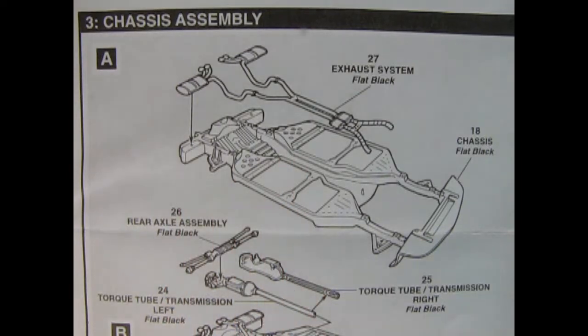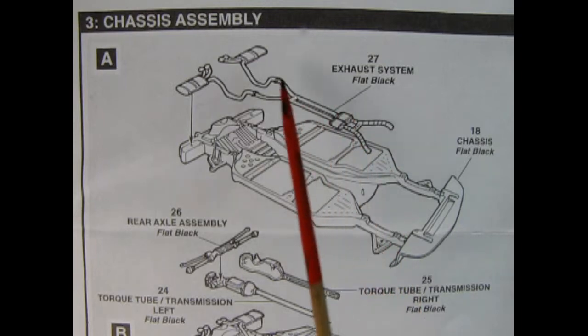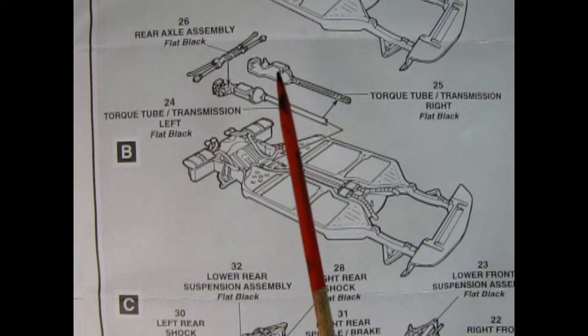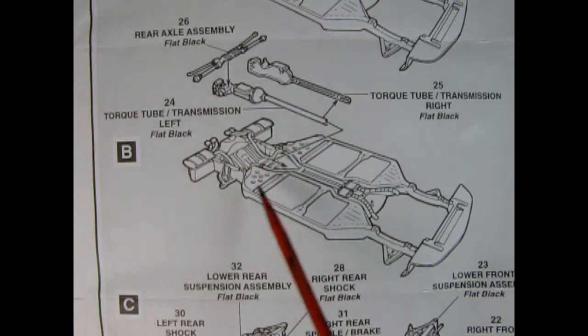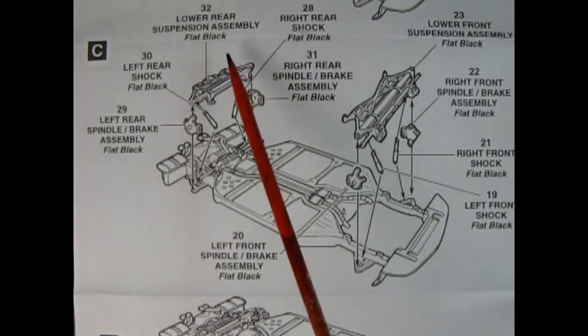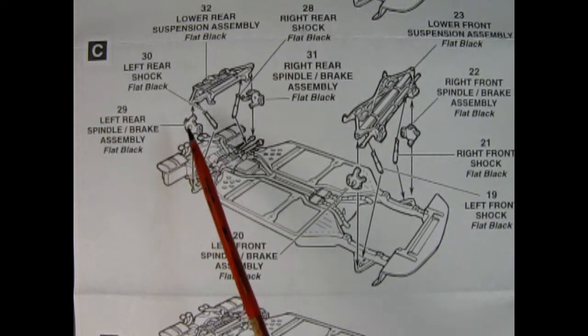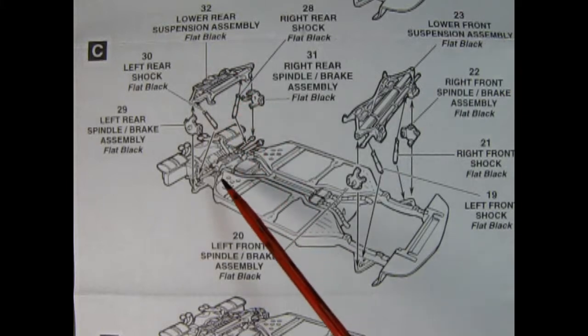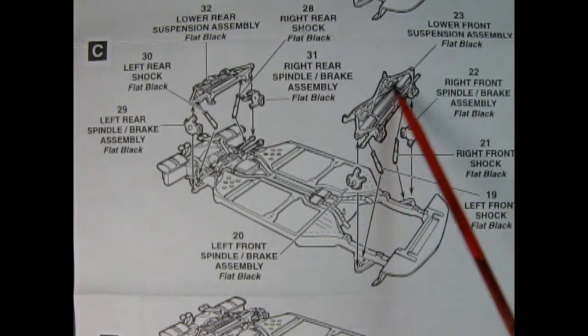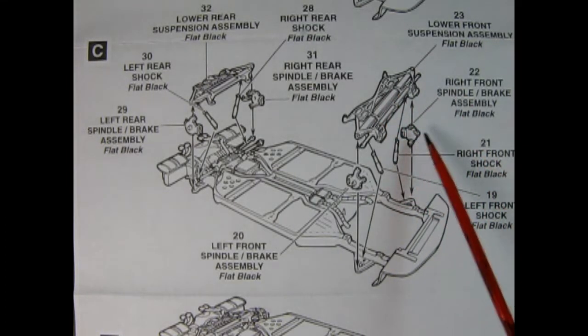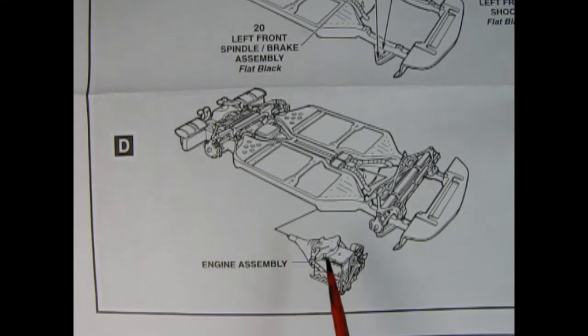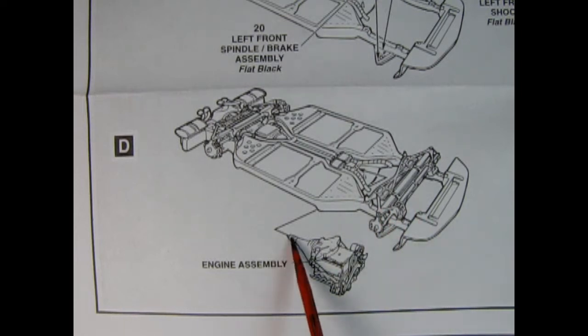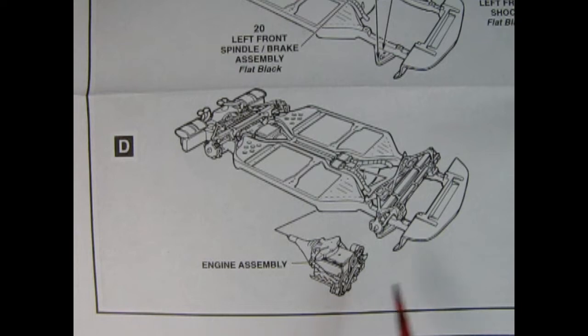Now here we have our chassis assembly with four steps. Here we have our exhaust system which will be cleaned up and then glued down onto the chassis. Part B uses the rear axle assembly with the spring back here, and then we've got left and right hand for our torque tube and transmission. Step C shows the lower rear assembly suspension package going on with your left rear spindle and right rear spindle, as well as your shock absorbers. In the front you've got your entire front end clip with shock absorbers and your right and left hand side front spindles. Step D shows our engine from the previous assembly being glued up in here. The transmission is going to go onto the driveshaft pin and there's a little hole which will glue onto a crossmember.